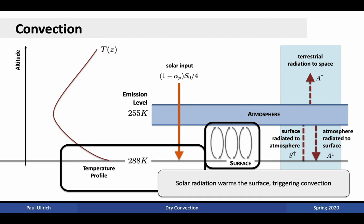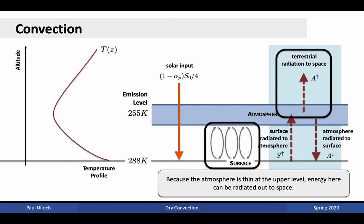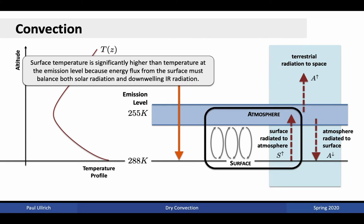The rising air occurs because the warmer temperatures are associated with lower densities, and lower density fluids will be buoyant in the environmental background. Solar radiation warms the surface, producing temperatures too large for the system to be stable, and consequently triggers convection. Convection results in an exchange of air between the near surface and the atmosphere. The high potential temperature air at the surface is exchanged with the low potential temperature air aloft. Because the atmosphere is thin at the upper levels, energy can then be radiated out to space at the cooler emission temperature of 255 Kelvin.